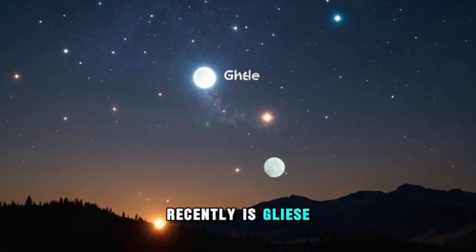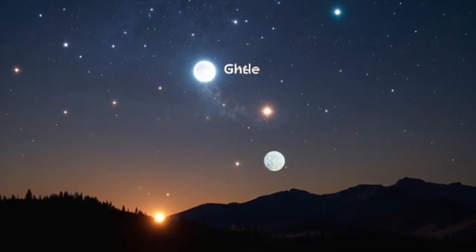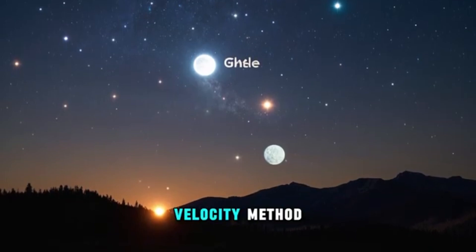One such planet that was discovered recently is Gliese 581g, which was found using the radial velocity method.